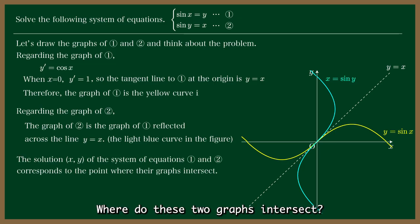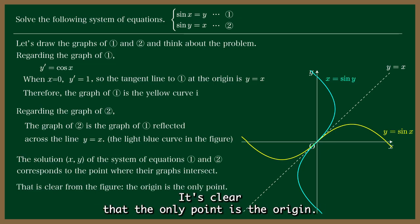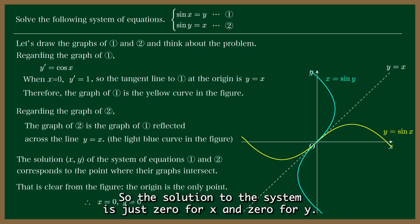Where do these two graphs intersect? It's clear that the only point is the origin. So the solution to the system is just 0 for x and 0 for y.